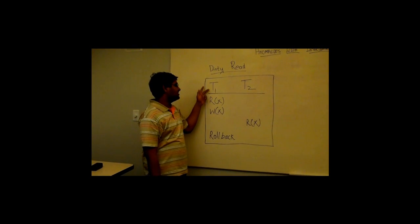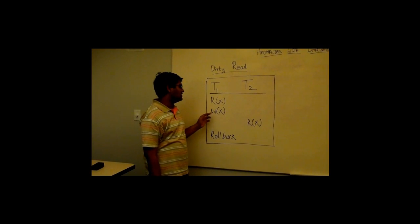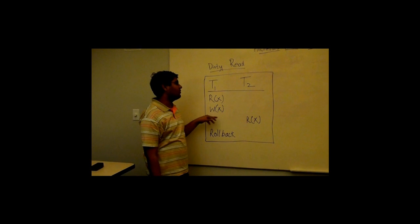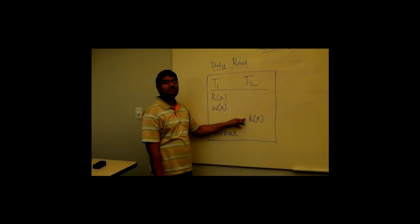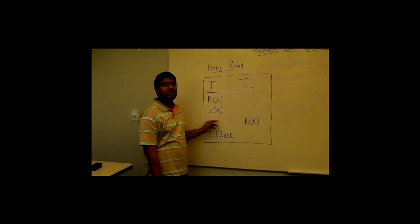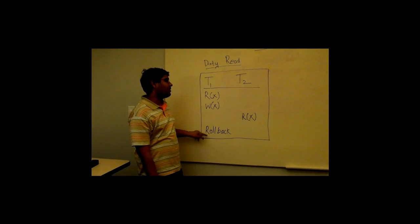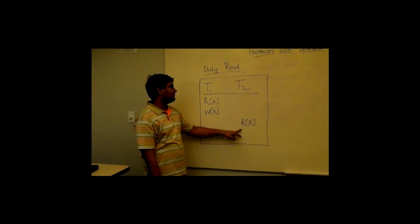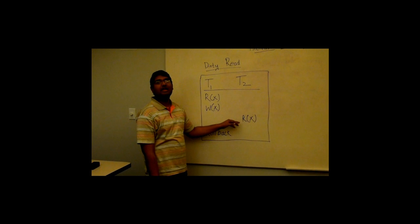Coming to dirty read, in transaction T1, a read operation is performed and in same transaction T1, a write operation is performed. In transaction T2, a read operation is performed, and then, in transaction T1, a rollback is performed. Here, T2 reads a data item that has never existed or never really committed.